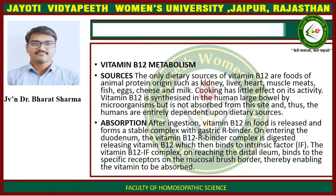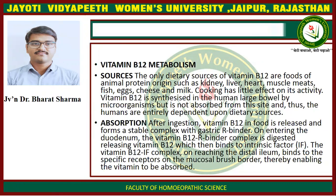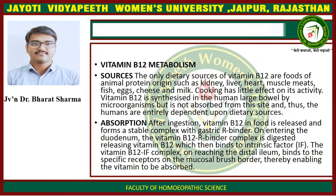Vitamin B12 Metabolism — Source: The only dietary sources of vitamin B12 are foods of animal protein origin such as kidney, liver, heart, muscle meats, fish, egg, cheese, and milk. Cooking has little effect on its activity. Vitamin B12 is synthesized in the human large bowel by microorganisms but is not absorbed from this site, and thus humans are entirely dependent upon dietary sources.